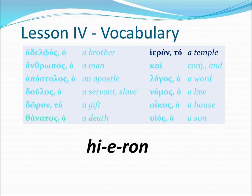Our next vocabulary word is hieron. Please note, this is a rough breather mark above the iota, so it would be hieron. If it were a smooth breather mark, it would be ieron, which would not be correct. Hieron has a neuter article associated with it, showing us that this noun is neuter, translated 'a temple.' To hieron would be 'the temple.'